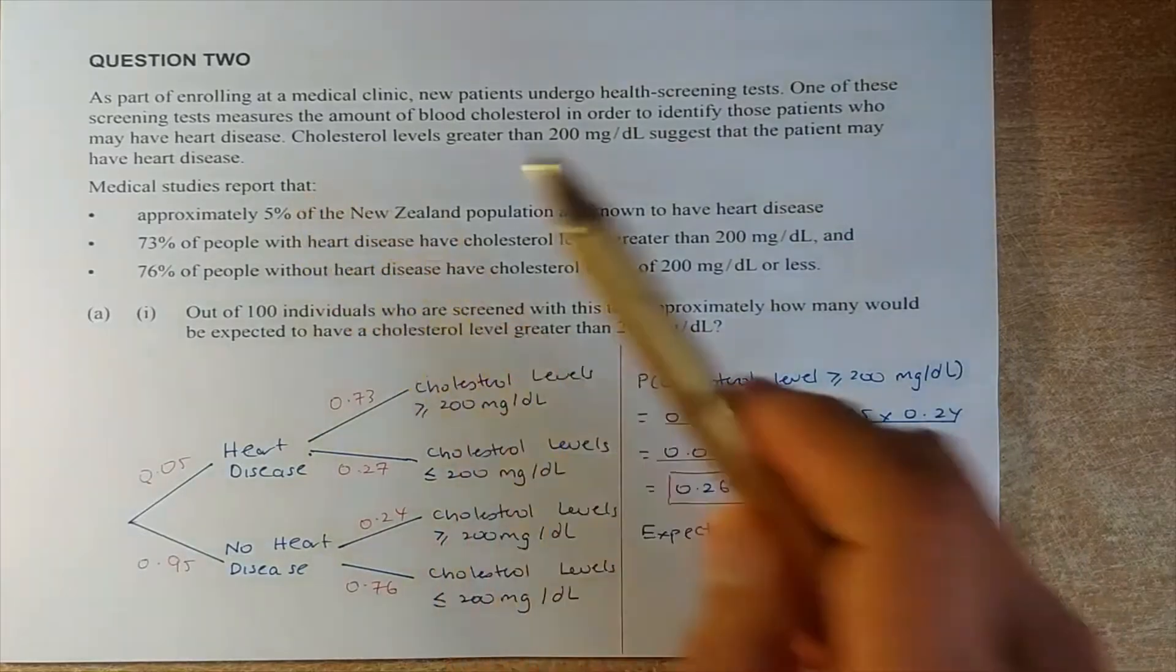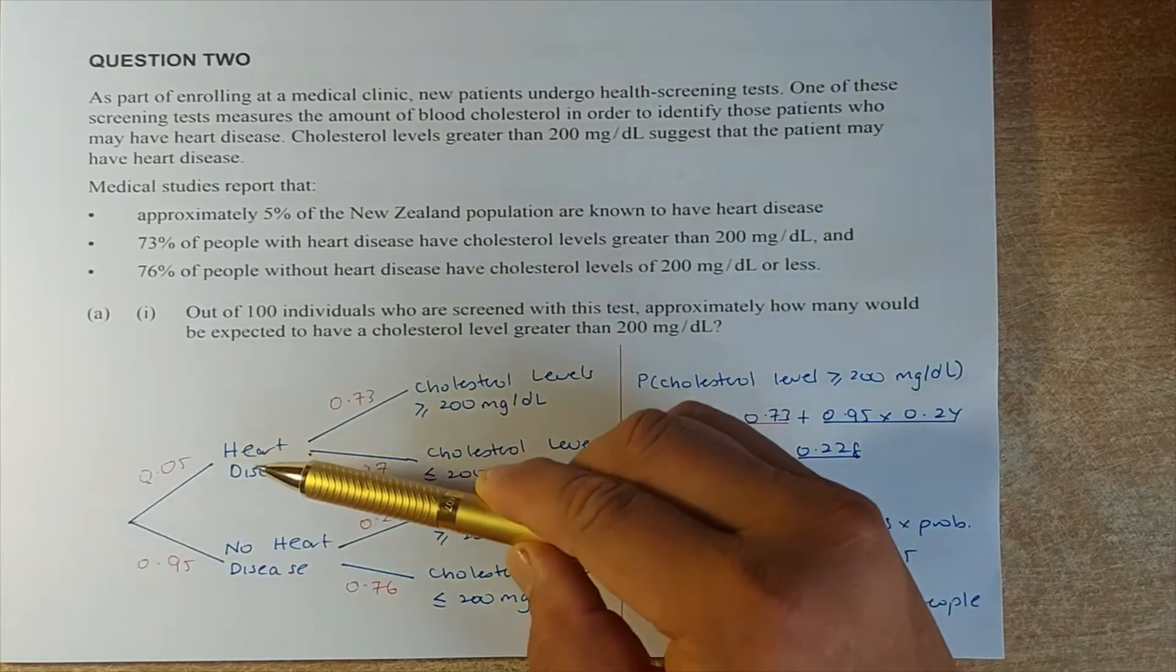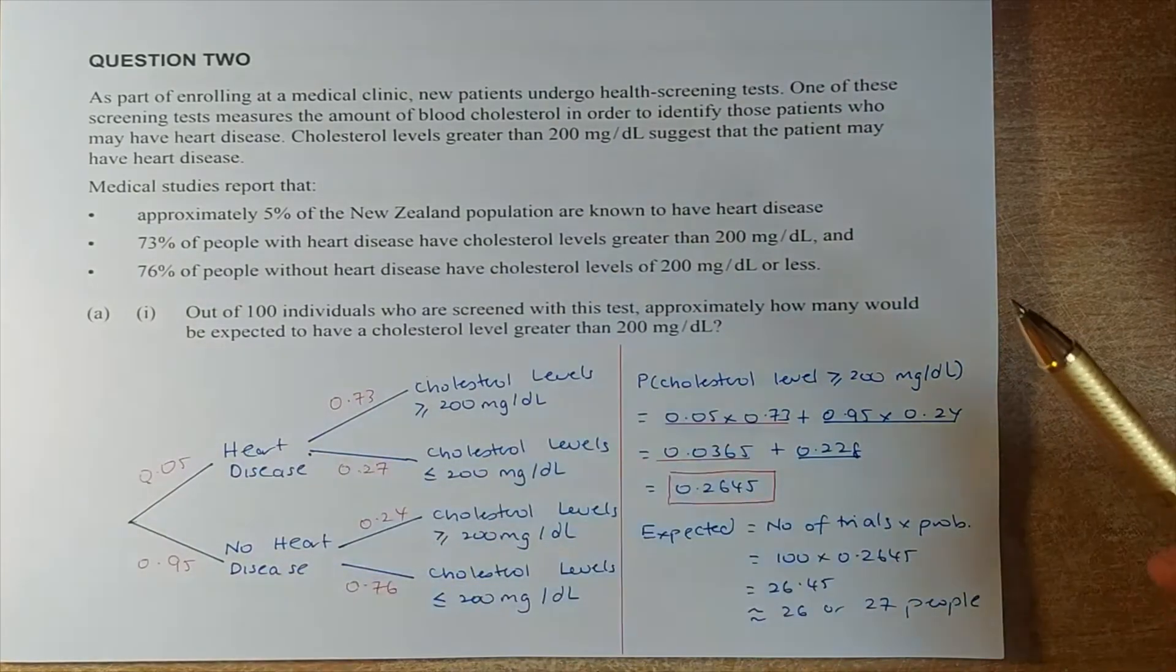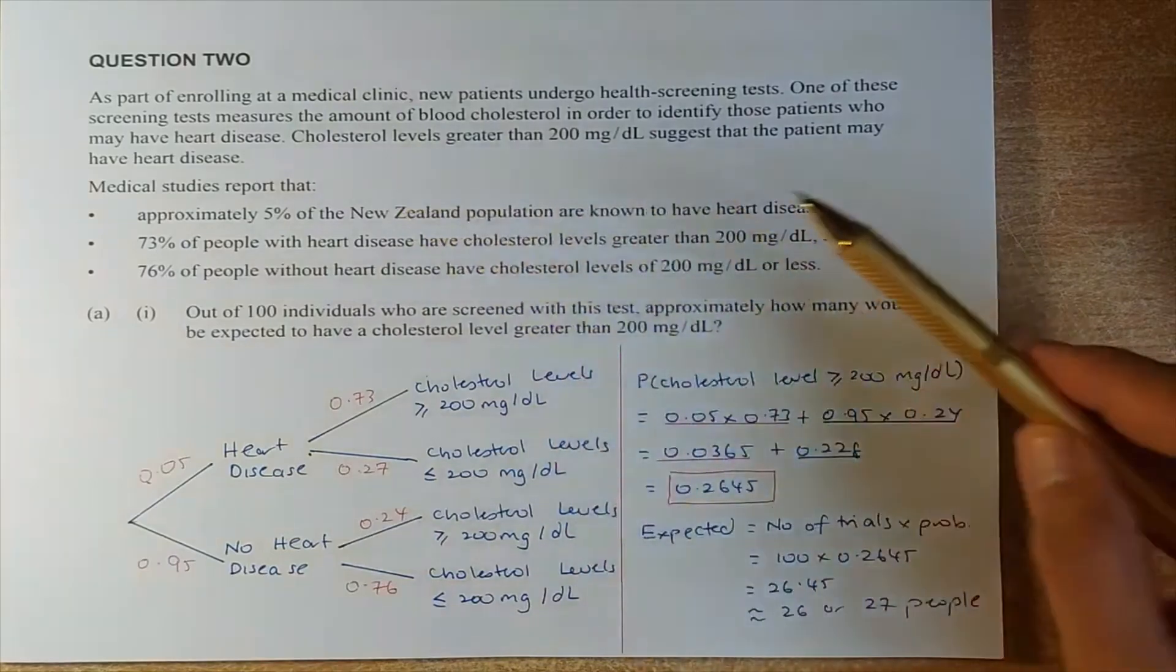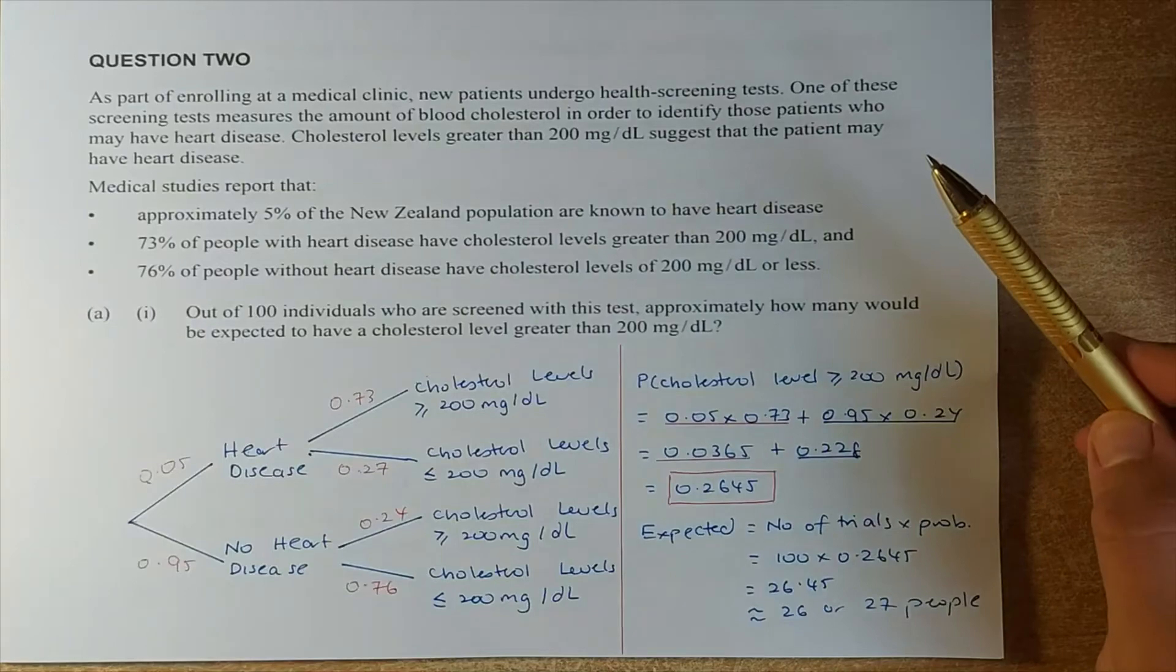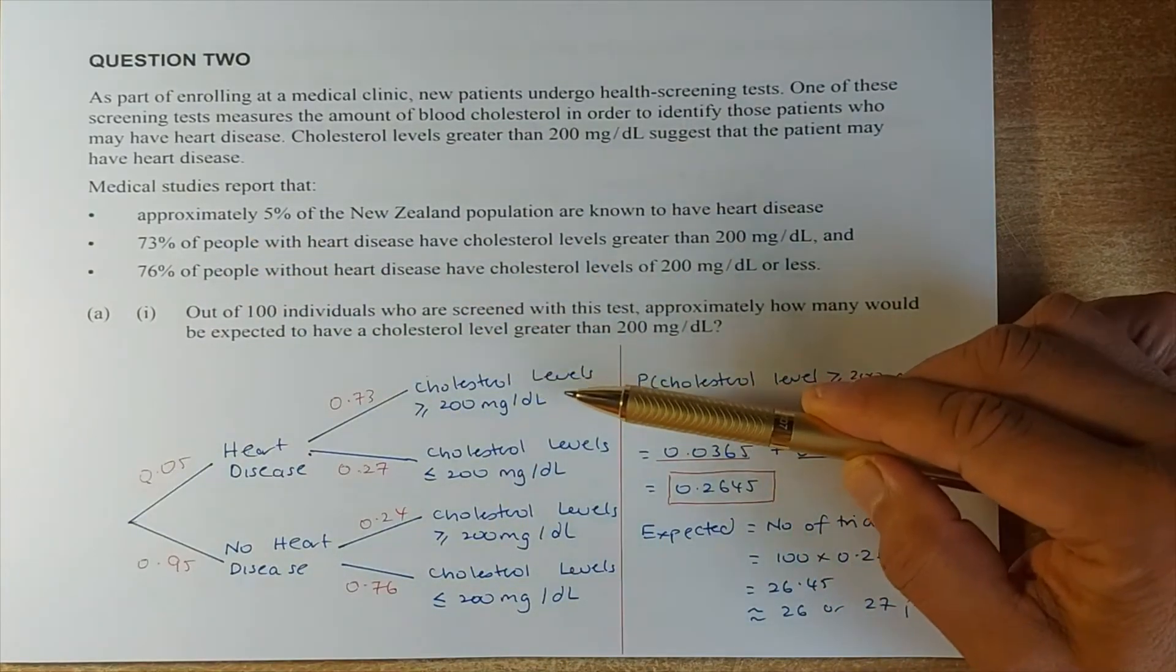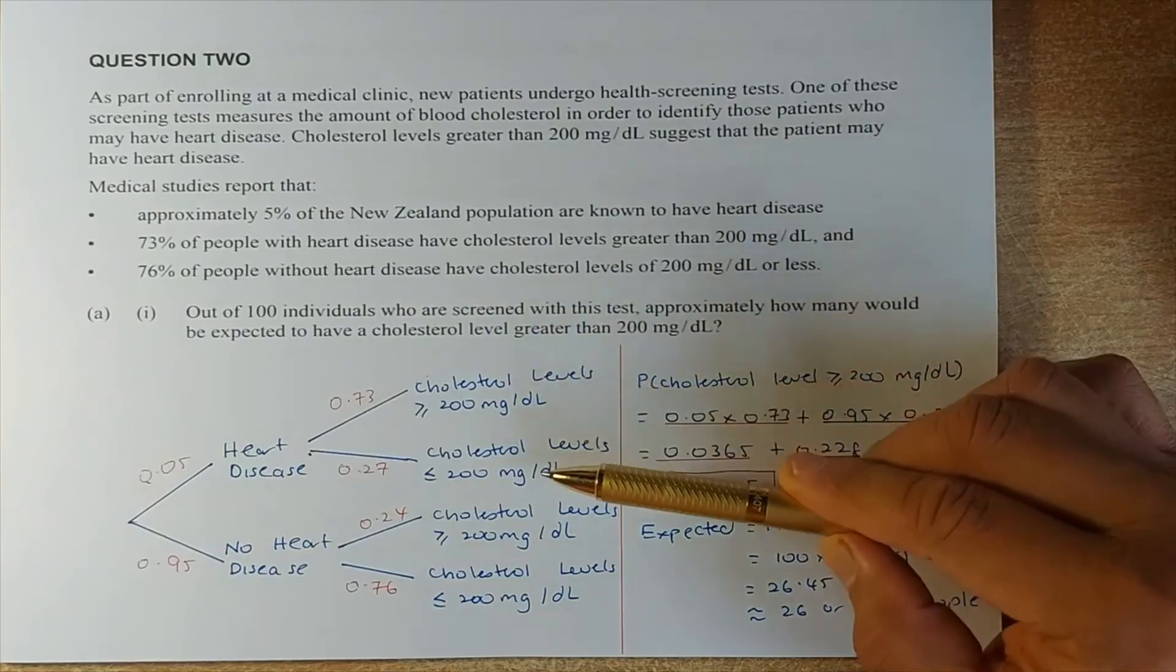We shall read the question. As part of enrolling in a medical clinic, new patient undergoes health screening tests. One of these involves measuring the amount of blood cholesterol to identify whether the patient has heart disease or not. So the first event is going to be heart disease and no heart disease. Then the second event is cholesterol levels greater than 200 mg per deciliter. So the second event is whether the cholesterol level is more than 200 or less than 200.